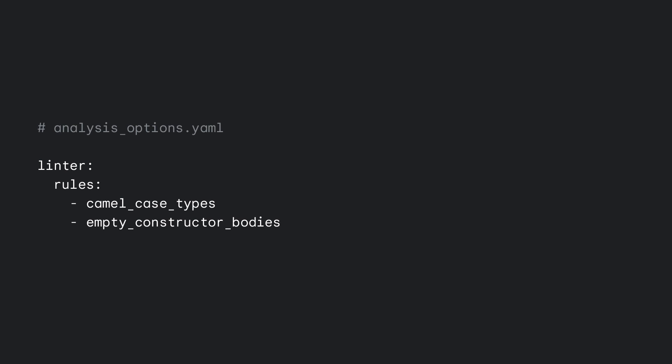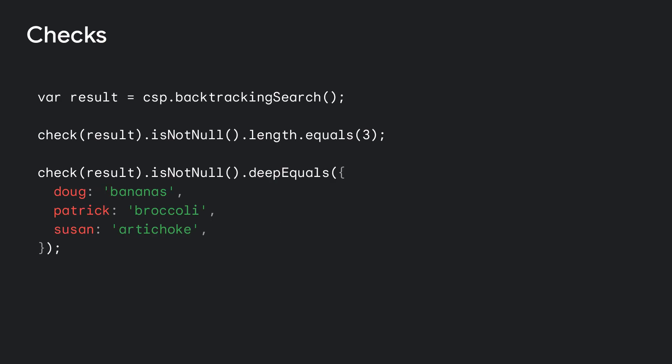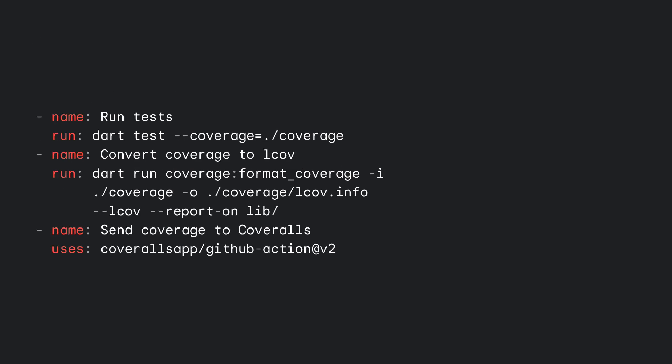You can configure the Dart Analyzer to enforce specific lint rules in your analysis_options.yaml file. You can find a list of lint rules in the description. The Dart team has also published a new package for making assertions in unit tests, called checks. It preserves the static type information of the object you're testing, so that you can get auto-completion. You can also collect code coverage to track the percentage of your code that's covered by tests, and report this information to apps like Coveralls. This can help you identify when a new feature might need more tests.